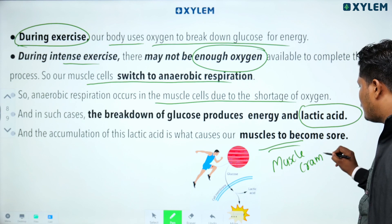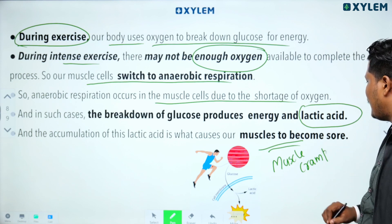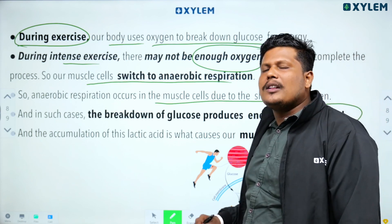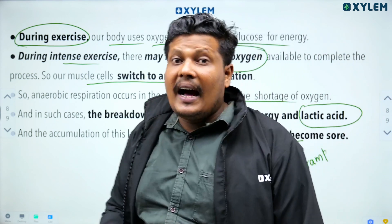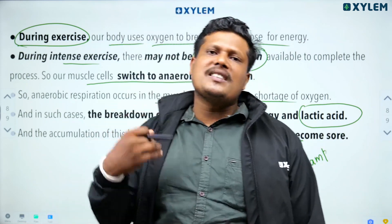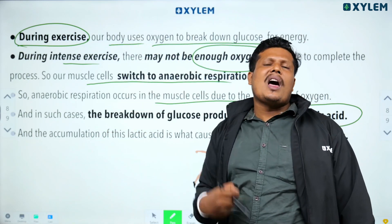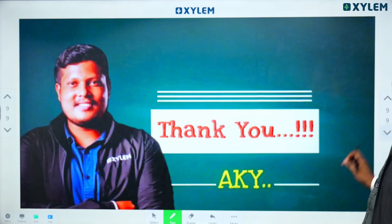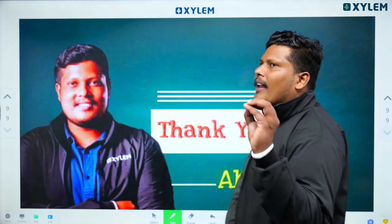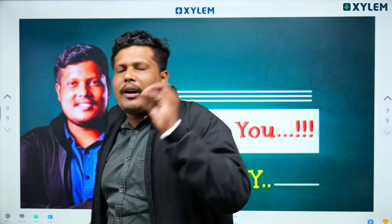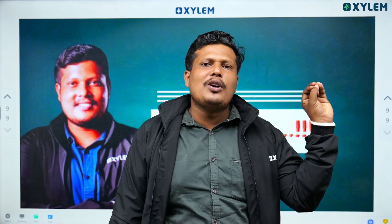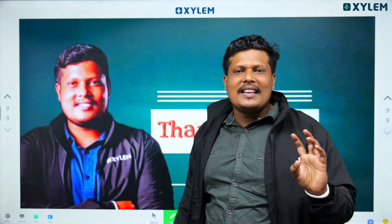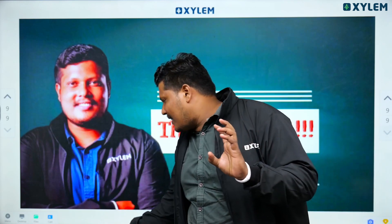This is a special case where our muscles undergo anaerobic respiration, leading to lactic acid deposition and muscle cramps. So we have discussed both aerobic respiration and anaerobic respiration.